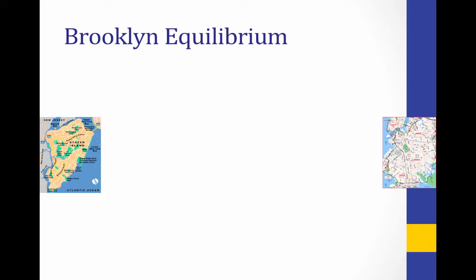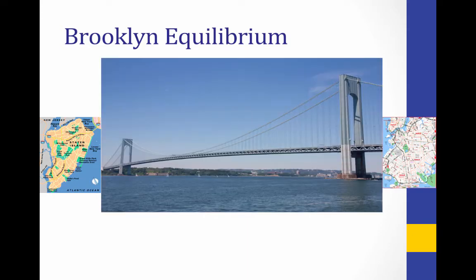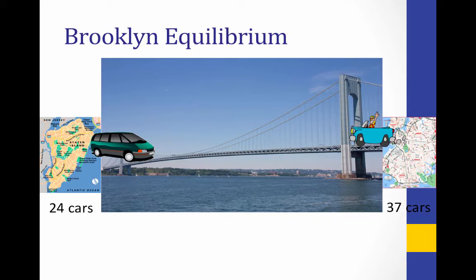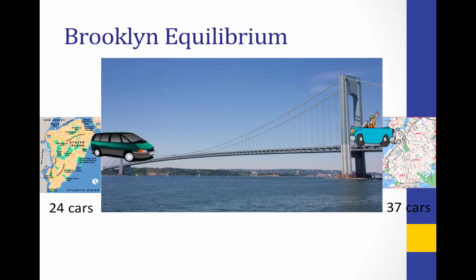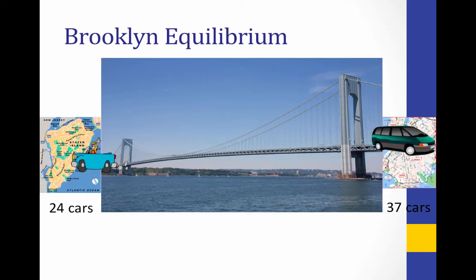Here we have Staten Island and here we have Brooklyn. The Verrazano Bridge connects Staten Island and Brooklyn. Imagine that one morning there are 24 cars in Staten Island and 37 cars in Brooklyn. If the rate of people driving over the bridge from Staten Island to Brooklyn is equal to the rate of people driving from Brooklyn to Staten Island, we will be at equilibrium — always having the same number of cars in each location, but they won't be the same cars because cars will be going consistently over the bridge.